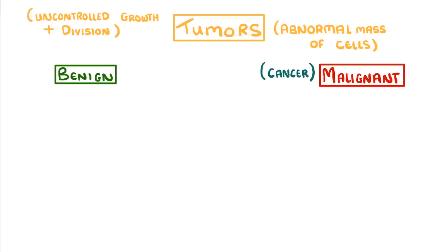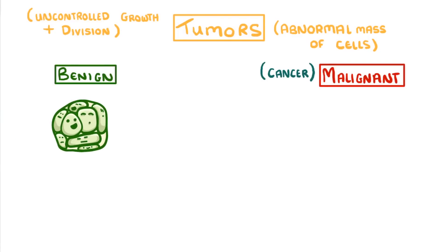In a benign tumour, the abnormal group of cells are contained within one area, usually within a membrane, and because they stay in that one place, they're not normally dangerous, so we don't call them cancer.